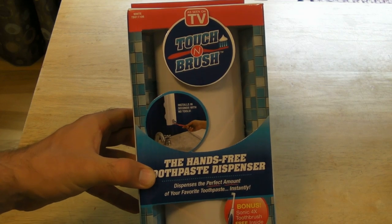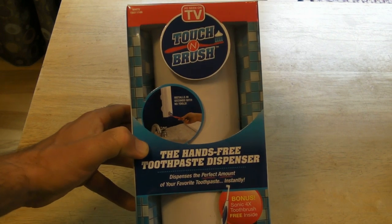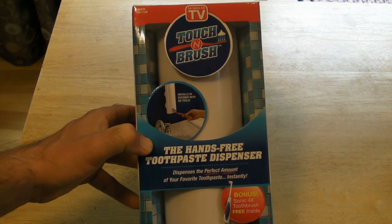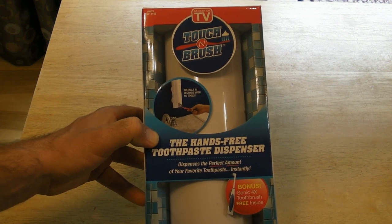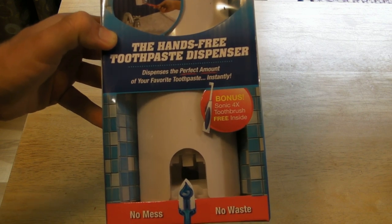Hi, welcome to the 9mall's review of the As Seen on TV Touch and Brush. It's the hands-free toothpaste dispenser. It dispenses the perfect amount of your favorite toothpaste instantly. And it says bonus, sonic 4x toothbrush free inside.